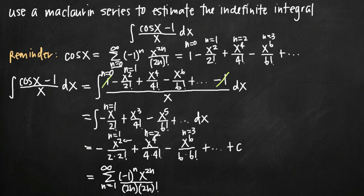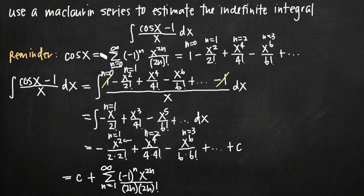Now we finalize by adding the constant of integration C. When we have a series representation, we like to add the constant of integration at the front so it's not confused as part of the series. So our final answer is C plus this series representation. That's how we use the Maclaurin series of cosine of x to estimate an indefinite integral.